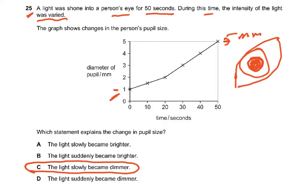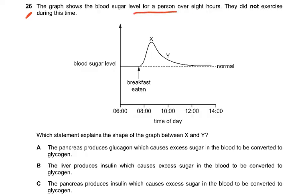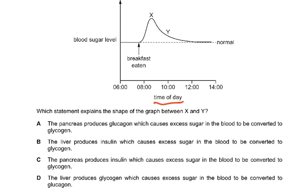Question 26: The graph shows blood sugar level for a person over eight hours. After breakfast, blood sugar rises then returns to normal. Between X and Y: the pancreas produces glucagon — no, glucagon is secreted when blood glucose falls. The liver produces insulin — wrong, the pancreas produces insulin. The correct answer is C: the pancreas produces insulin, which causes excess sugar in the blood to be converted to glycogen. Blood sugar is never converted to glucagon; glucagon is a hormone.